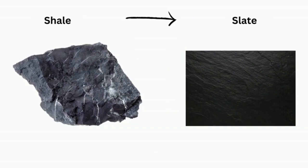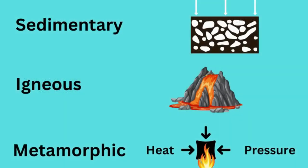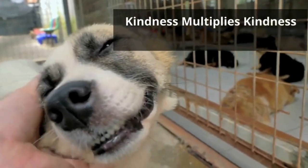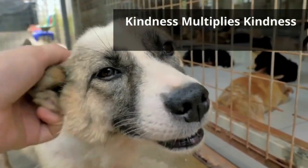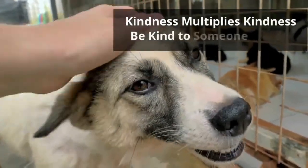So in summary, sedimentary rocks come from sediments, igneous rocks come from heat, and metamorphic rocks are born from heat and pressure. Thanks for watching, and remember, kindness multiplies kindness. Be kind to someone today.